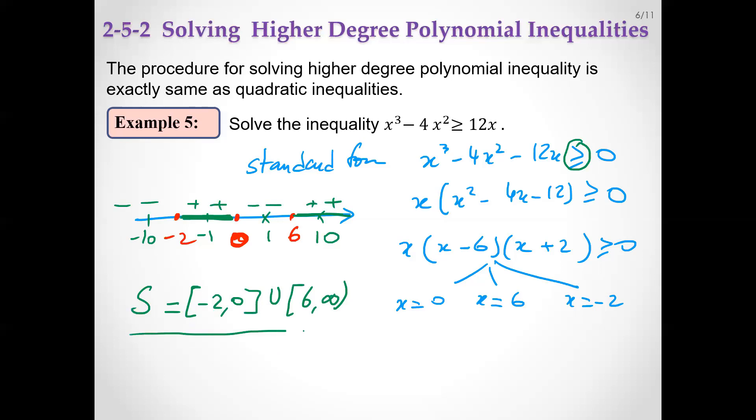Another example: solve the inequality x cubed minus x squared greater than zero. Here we factor: x squared times x minus 1. The roots: x is 0 double root, and x equals 1. Draw the line: x = 0 and 1.